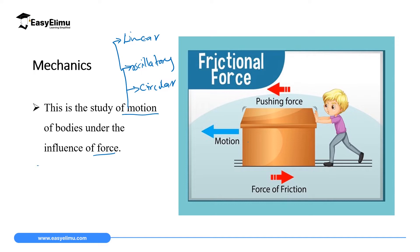Some topics in form one that lie under mechanics include the topic called force — the third topic in form one — where we talk about different types of forces, such as frictional force, which opposes motion. Another topic in form one under mechanics is pressure, defined as the force acting perpendicularly to a surface per unit area. Other mechanics topics appear in forms two, three, and four, all discussing motion of bodies under the influence of force.